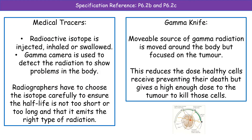We have a couple of uses of radiation to be aware of here. The first one is medical tracers. A medical tracer allows us to image things going on inside the body without carrying out any form of surgery. We use a radioactive isotope which will be injected, inhaled, or swallowed, depending on which part of the body we want to look at. We then use a gamma camera to detect the radiation — the camera is outside the body and we pass it over to detect where there's a greater concentration of radiation.